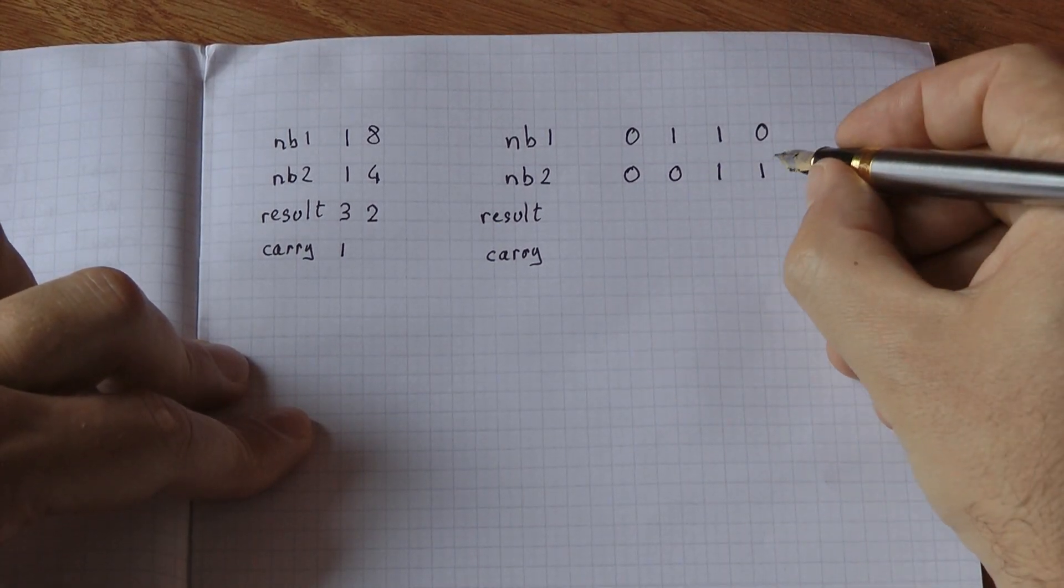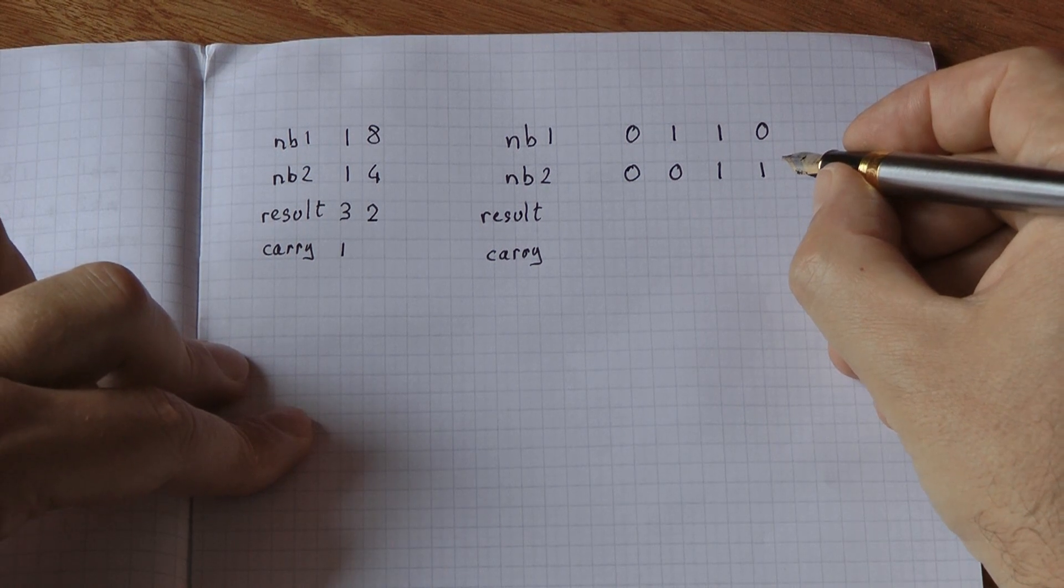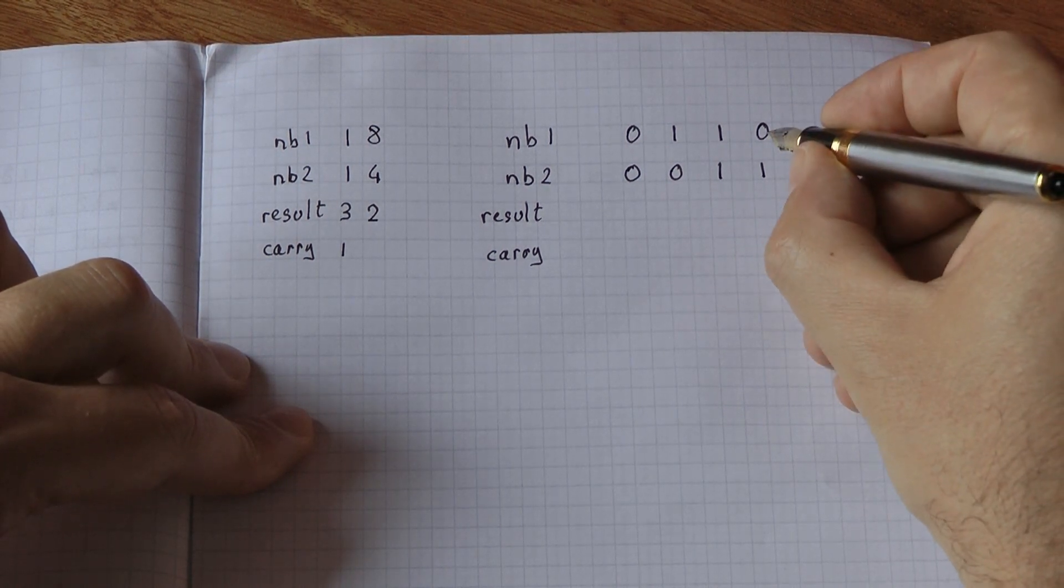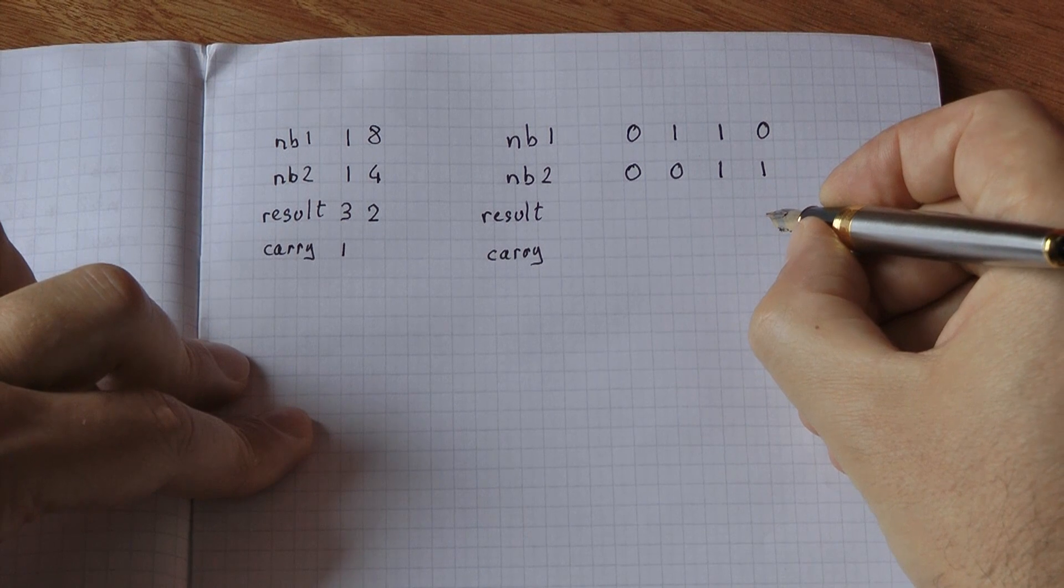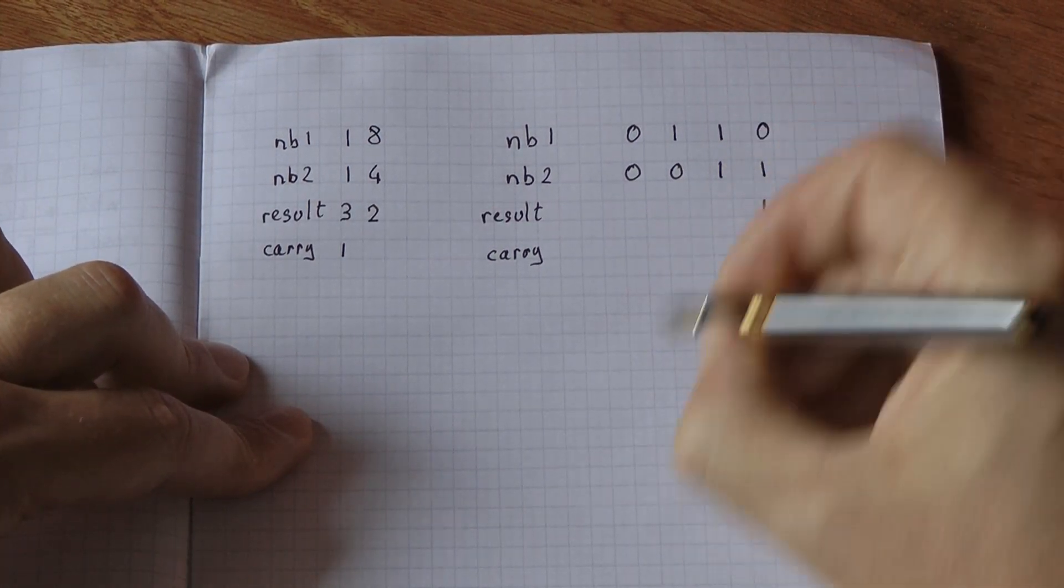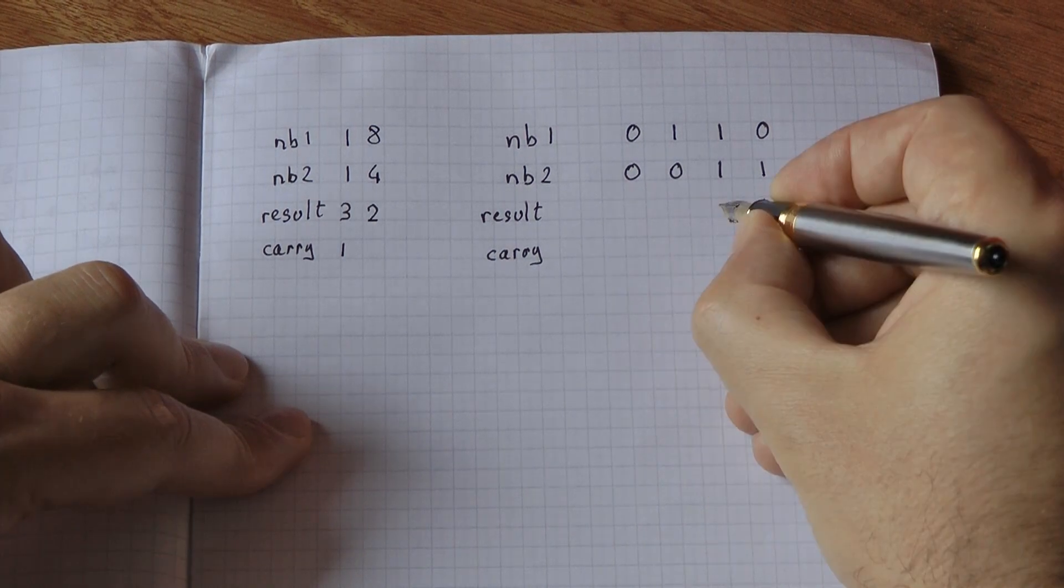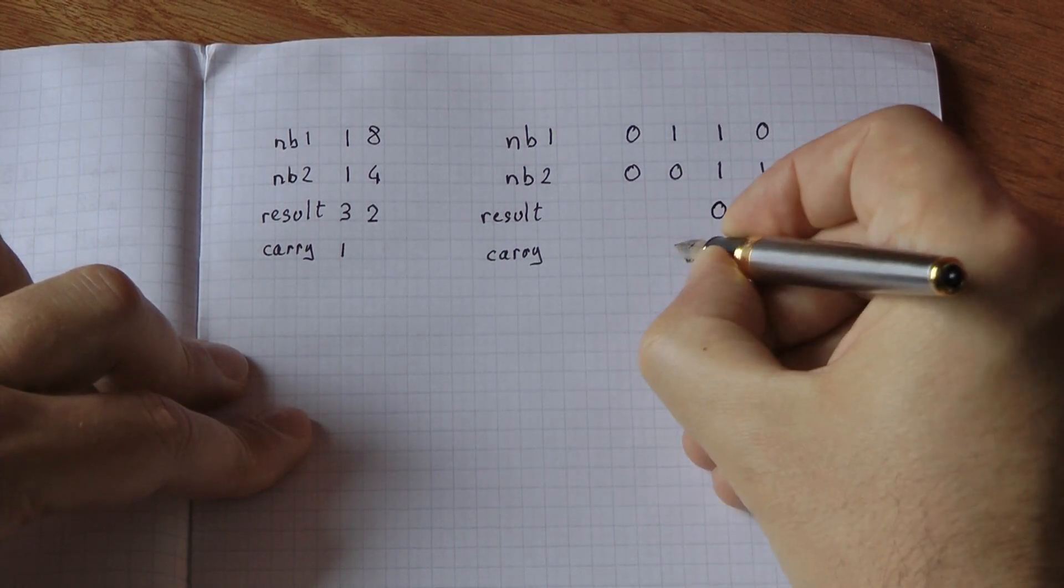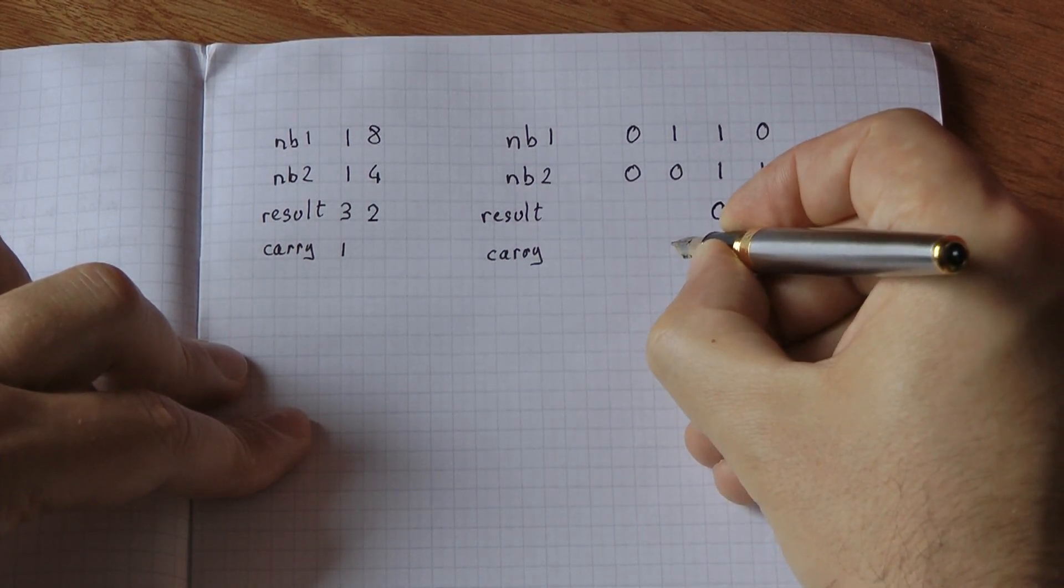And I start with the first column, starting from the right. 0 plus 1 is 1.